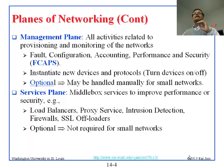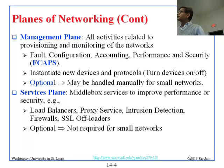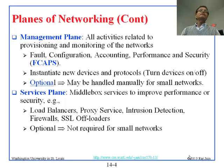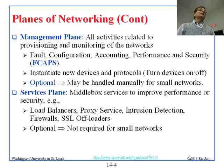The fourth plane is the services plane. Even if everything is running fine and all tables are filled in, you may want to optimize performance or security. Things like load balancers, proxy services, intrusion detection, firewalls, and SSL offloaders all go into the services plane. These are again optional — in a home network you run without any of these offloaders. So the four planes are: data plane, control plane, management plane, and services plane.